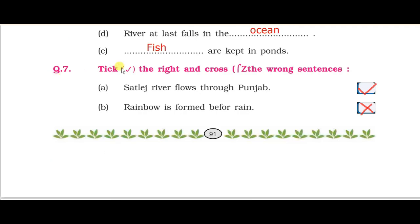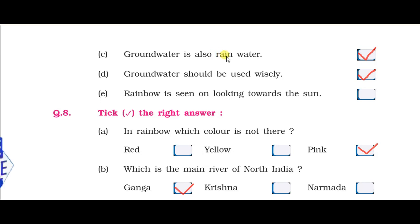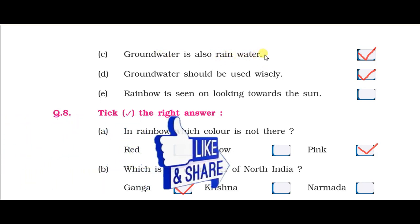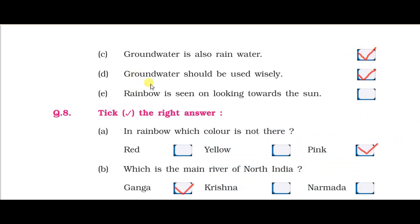Question number seven — tick right and cross the wrong sentences. First sentence: the river flows from Punjab — this is true, so tick here. Next: rainbow is formed before rain — this sentence is wrong, so put a cross sign. Next: groundwater is also rain water — true, tick here. Next: groundwater should be used wisely — also true, tick here.